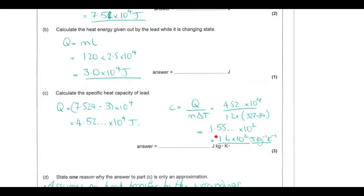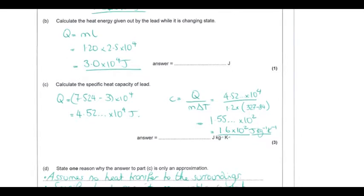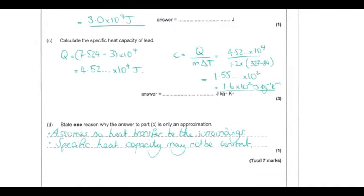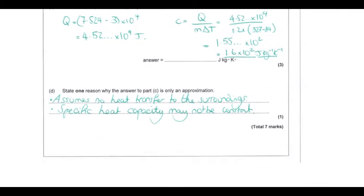The calculated value of around 155 is only an approximation. In all thermal physics problems we assume there is no heat exchange with the surroundings — all energy from the lead is transferred to the iron. We're also assuming the specific heat capacity remains constant over the temperature range, which for most materials isn't strictly true over large temperature changes. Both assumptions contribute to the approximation.